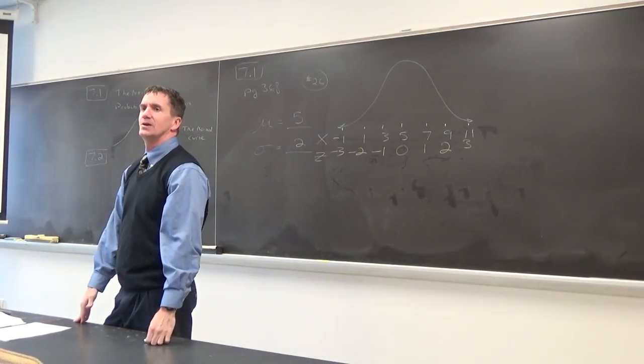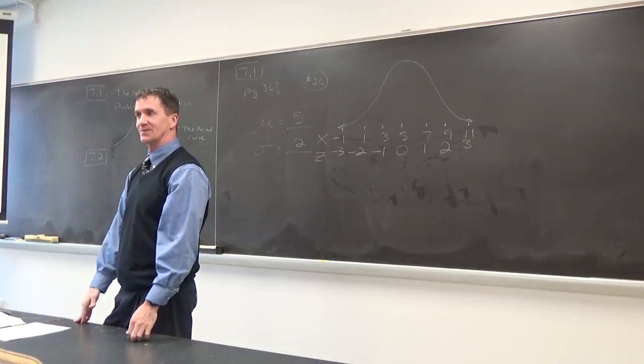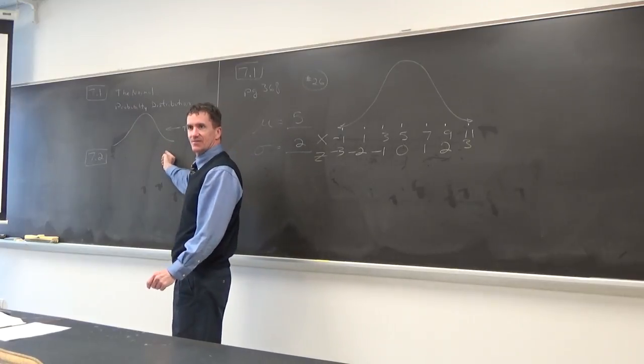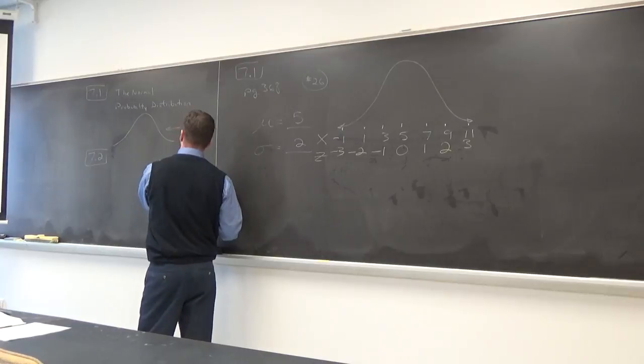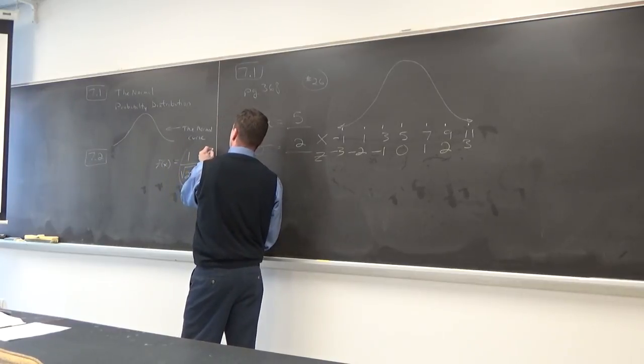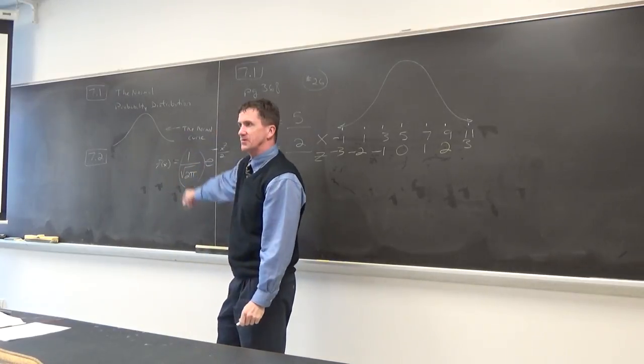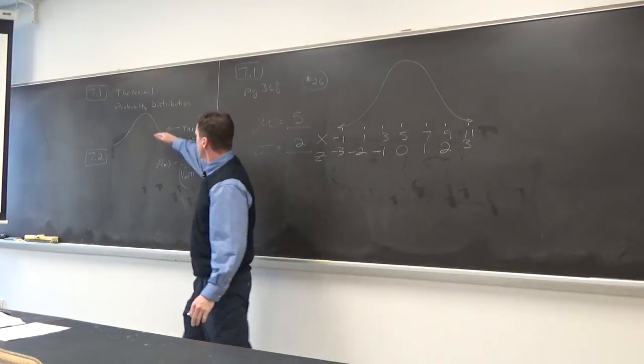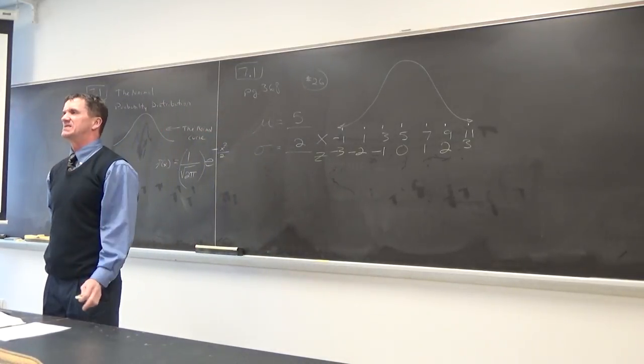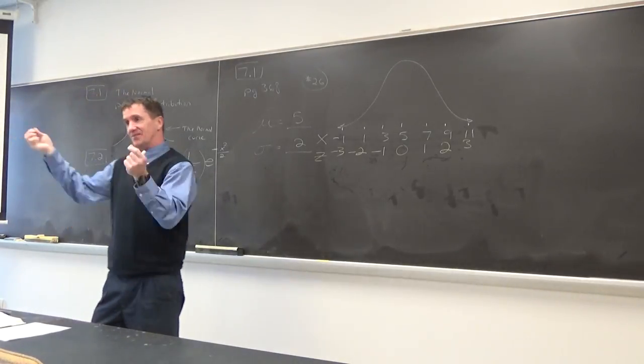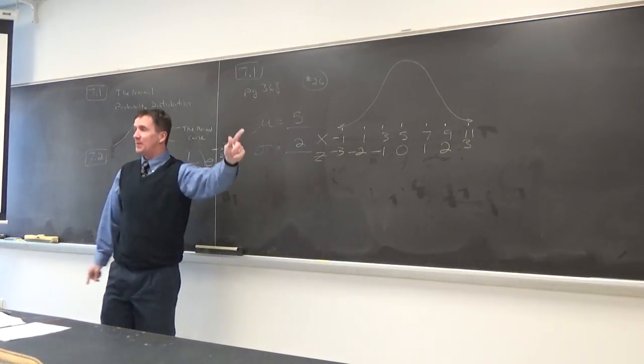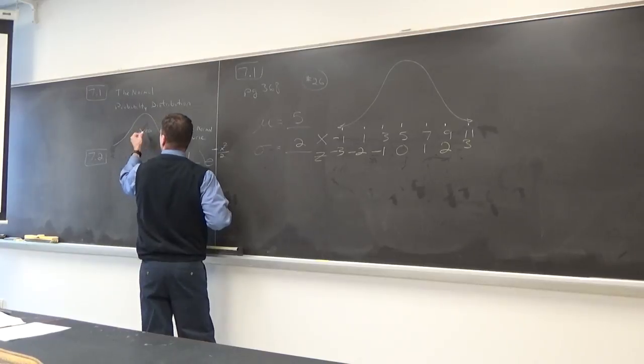So this you can call the normal curve. Now, is anybody in this class interested in seeing the actual formula for that curve? This curve right here, I'll call it f of x, and it's one over the square root of two pi times e to the negative x squared over two.